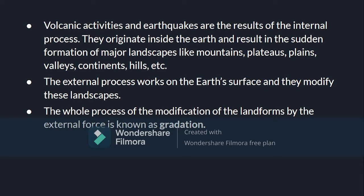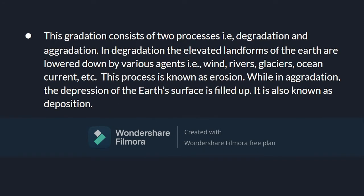Now coming to the external process, it works on the earth's surface and modifies these landscapes. The process of modification of landforms by an external force is known as gradation. Gradation consists of two processes: degradation and aggradation. In degradation, elevated landforms are lowered down by various agents like winds, rivers, and glaciers — this process is known as erosion. In aggradation, the depression of the earth's surface is filled up, which is known as deposition.